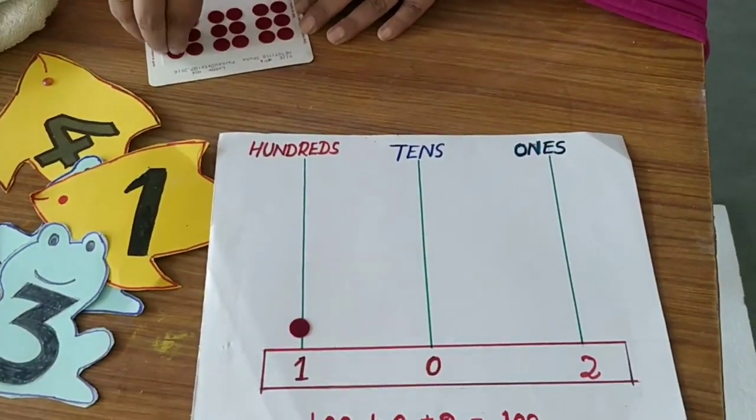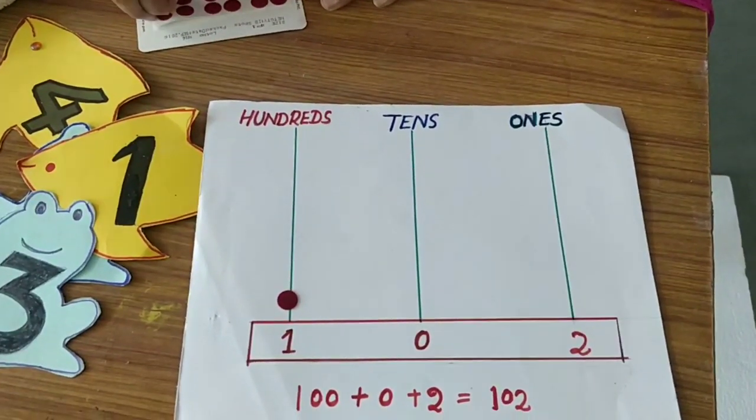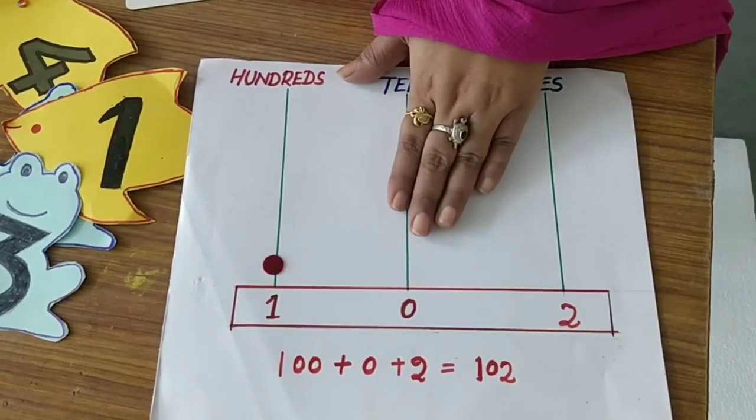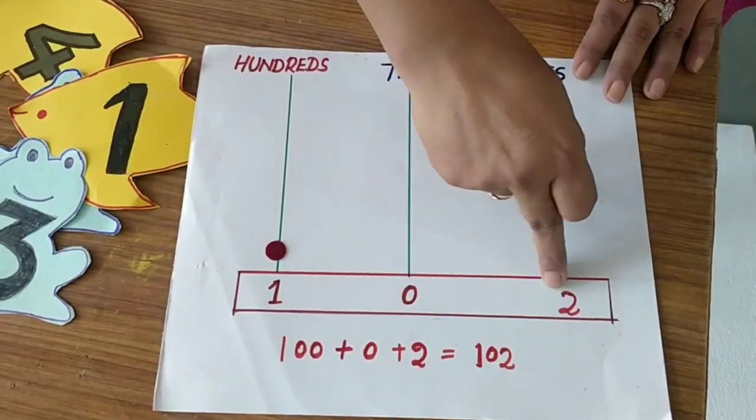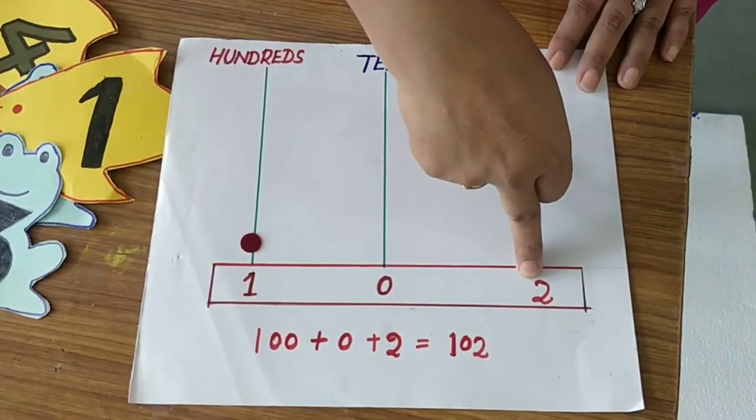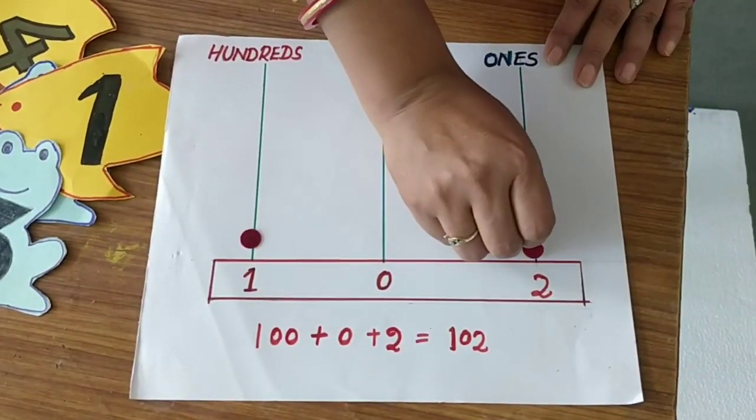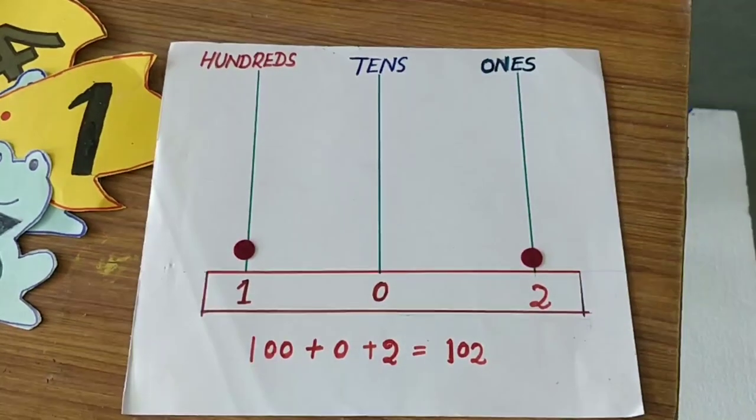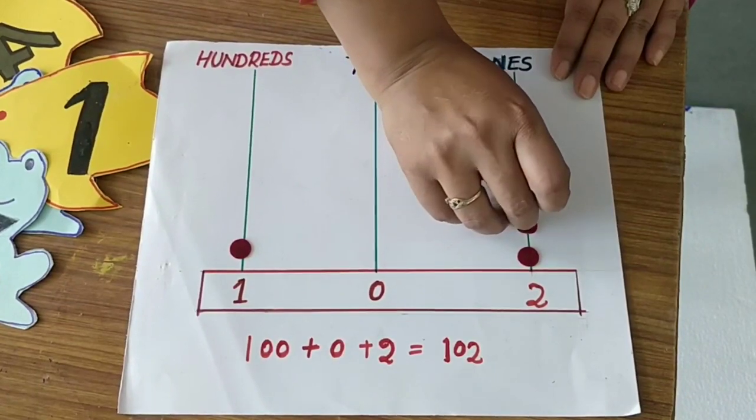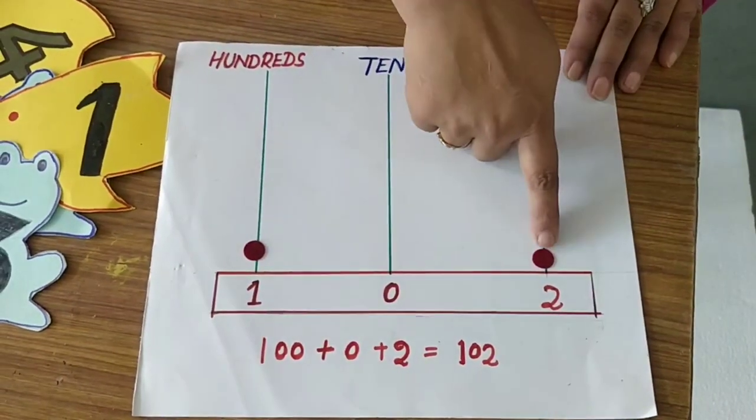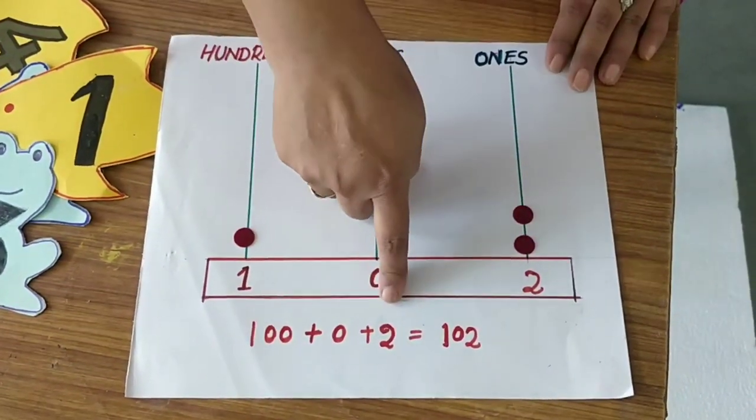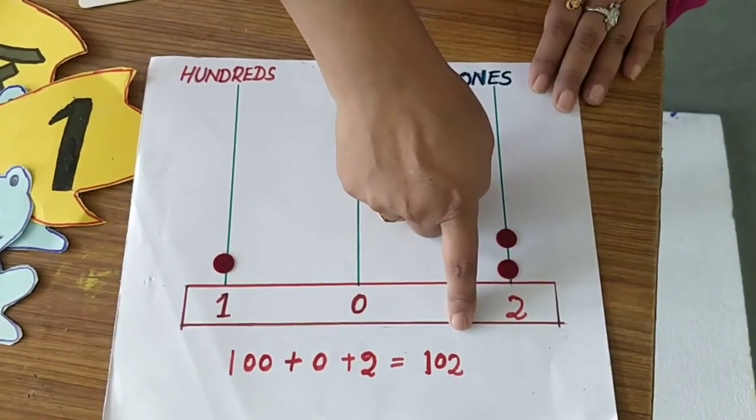Then, how many numbers are there? In tens place, there is no number. So, you have to leave this place. And, how many numbers are there in ones place. There are 2 numbers. So, you have to put 1 candy and another candy. So, it is the number 2. So, 100 plus 0 plus 2. The number is 102.